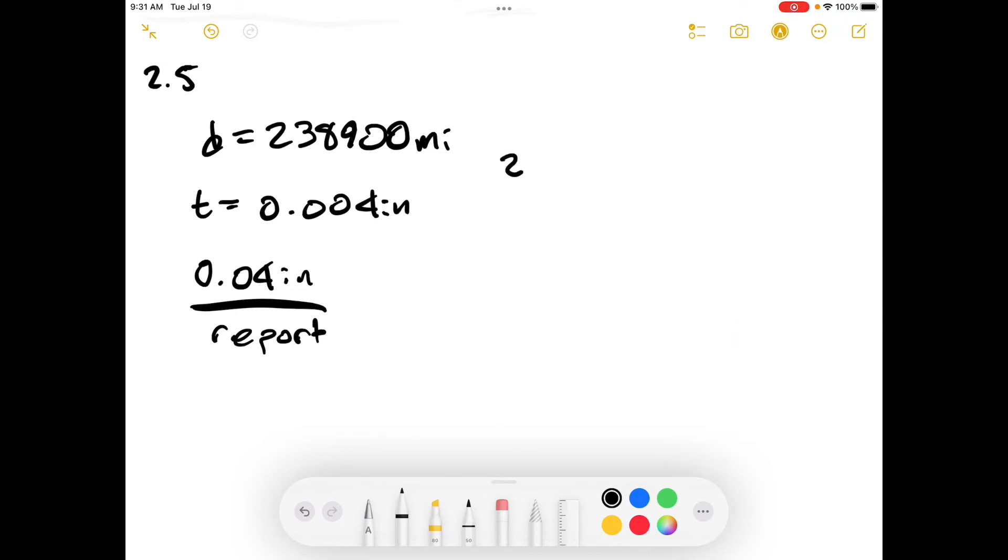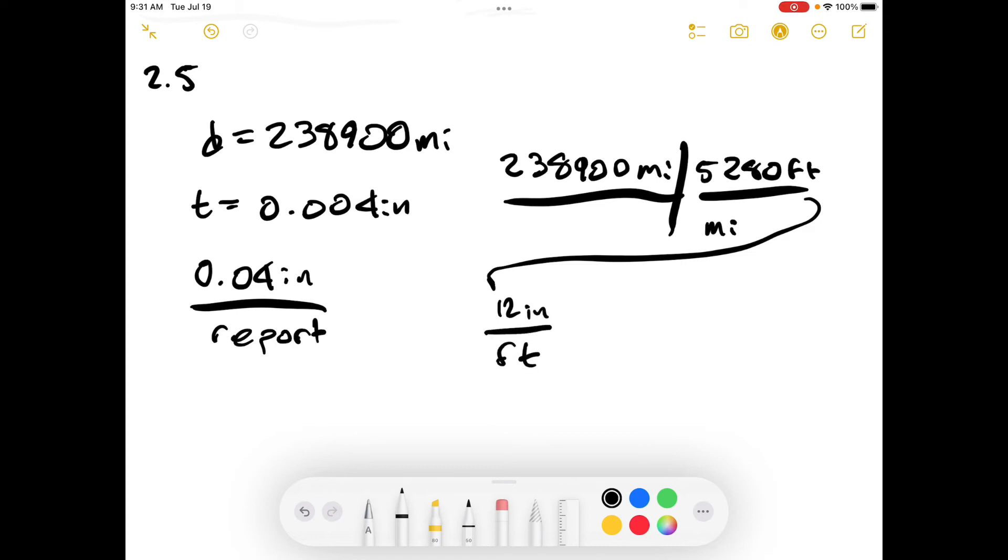So now we say there are 238,900 miles, and we have 5,280 feet per mile. And continuing over here, 12 inches per foot,